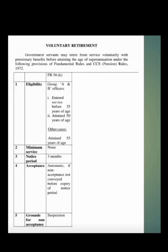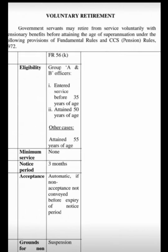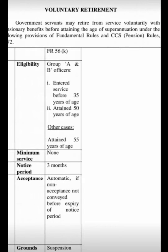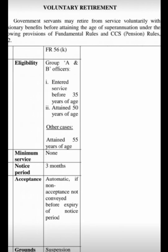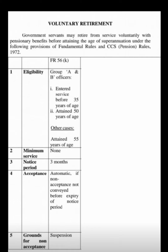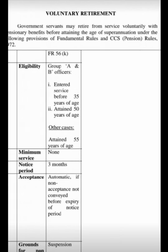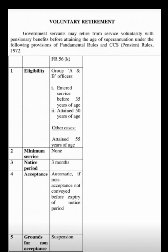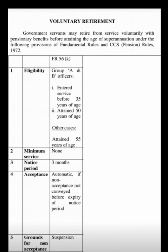Voluntary Retirement Guidelines. Government servants may retire from service voluntarily with pensionary benefits before attaining the age of superannuation under the following provisions of Fundamental Rules and CCS Pension Rules 1972.